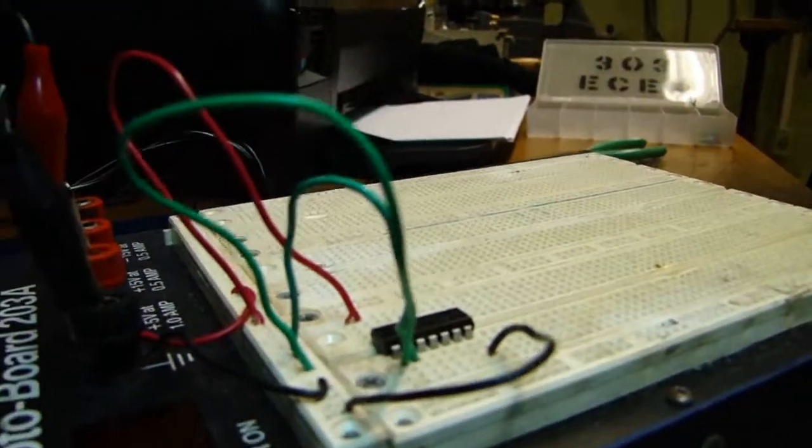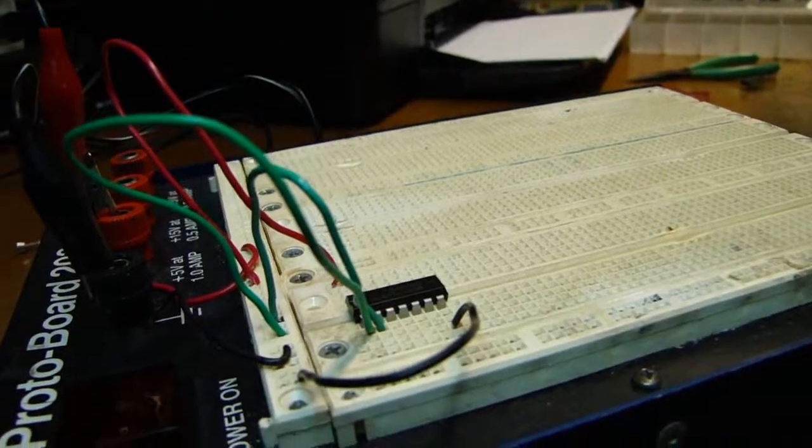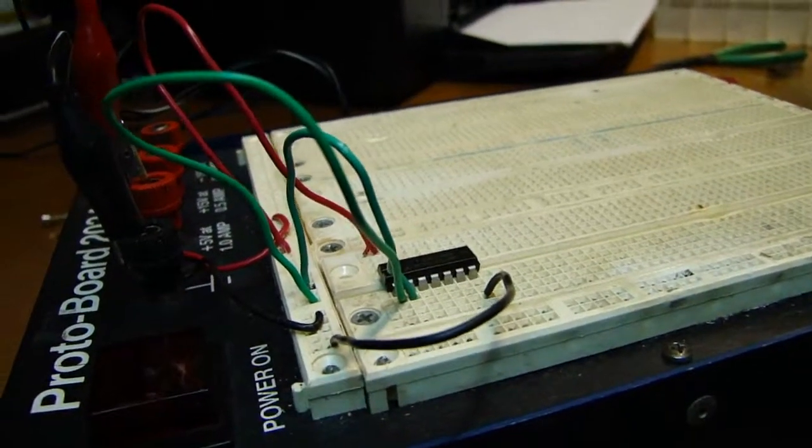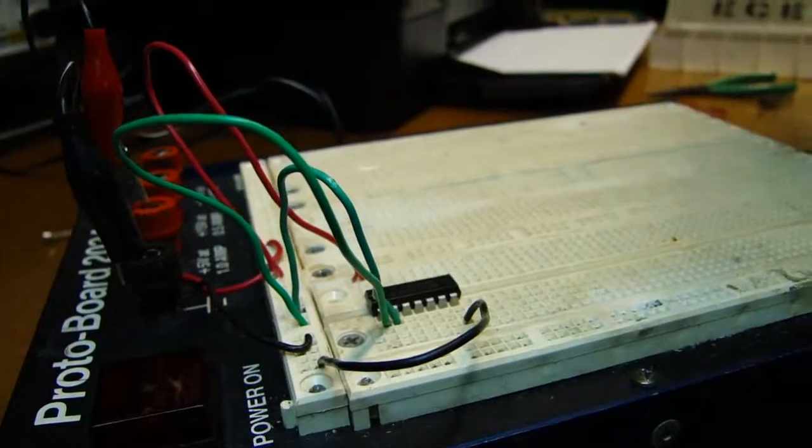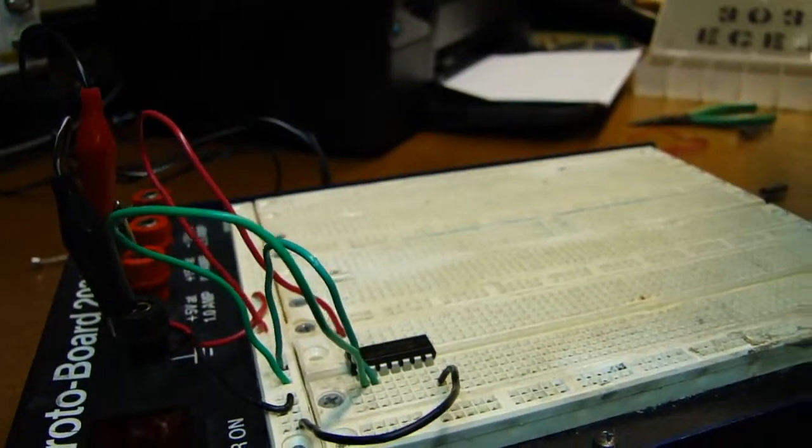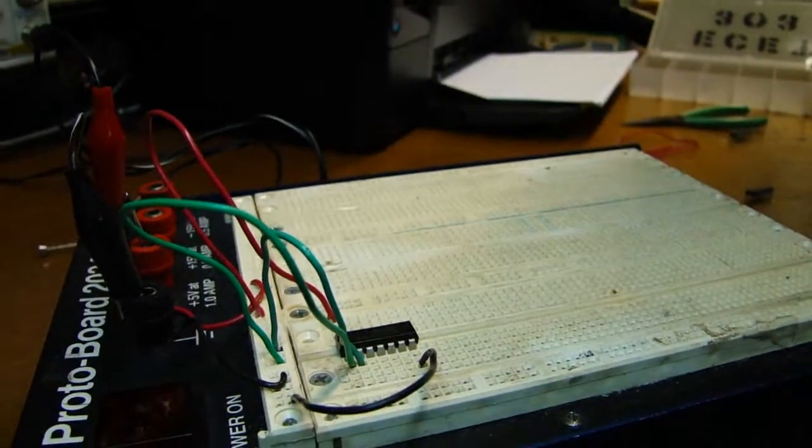We know that the output should be high. As I said before, the way to remember the NAND gate is that when both inputs are high, that's the only time, the only condition for which the output is going to be low.